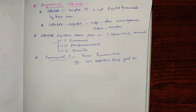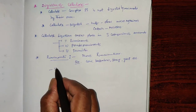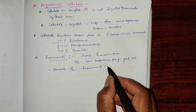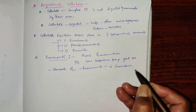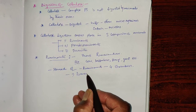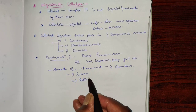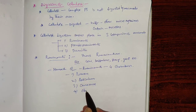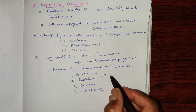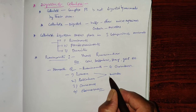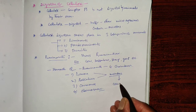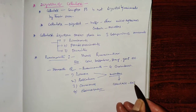The stomach of ruminants consists of four chambers: rumen, reticulum, omasum, and abomasum. In the rumen and reticulum, microorganisms are present which can synthesize the cellulase enzyme.